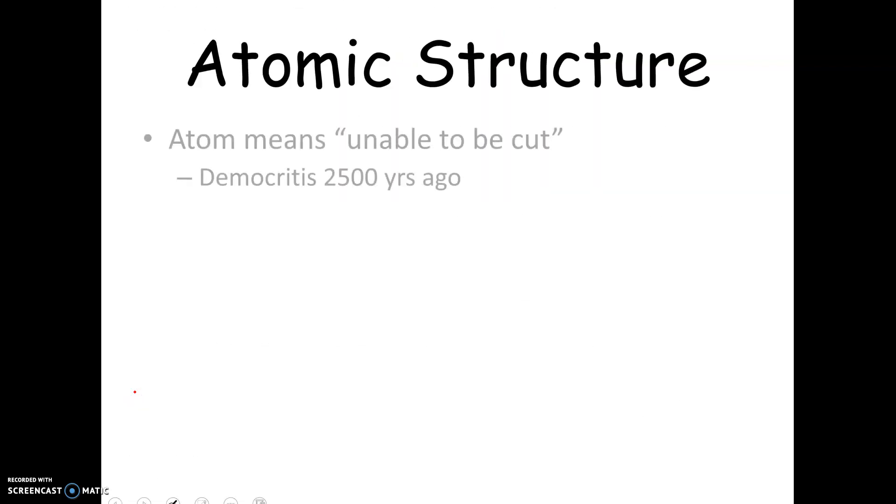Let's talk about atoms. Matter is made out of atoms. Atom actually comes from Democritus 2,500 years ago. It means unable to be cut. Now technically, we know today that you can have something smaller than an atom - a subatomic particle. But atoms are the smallest units of matter.